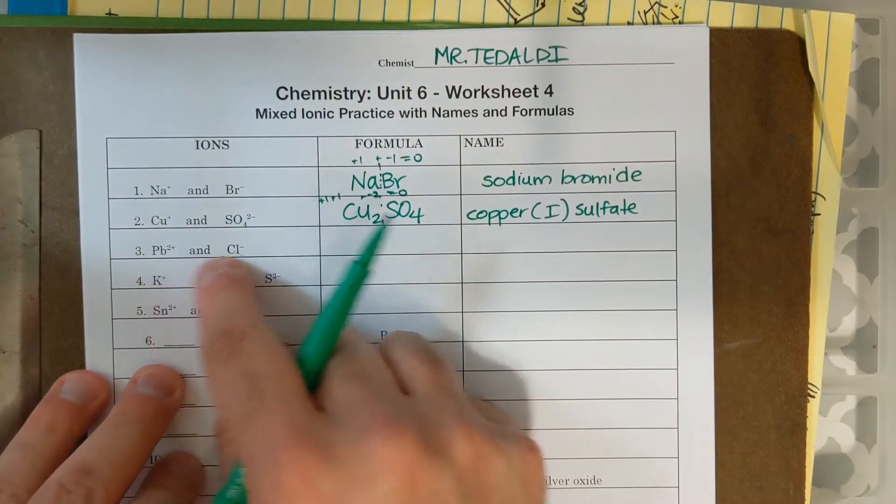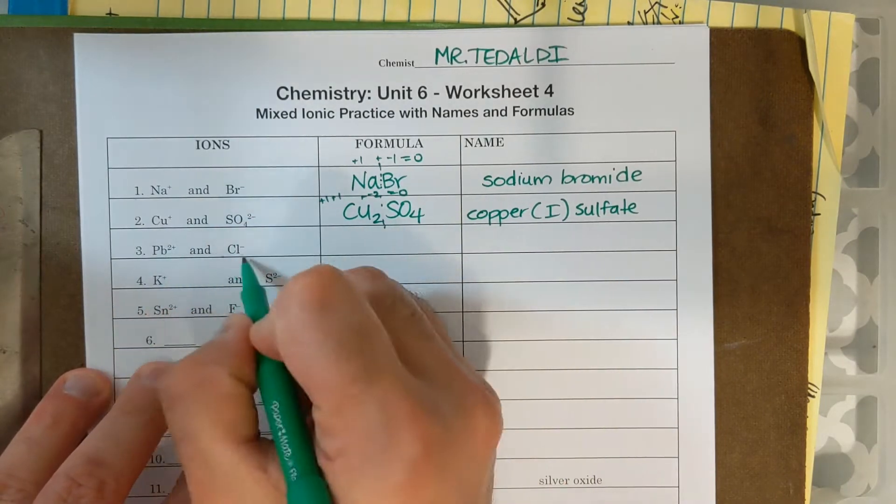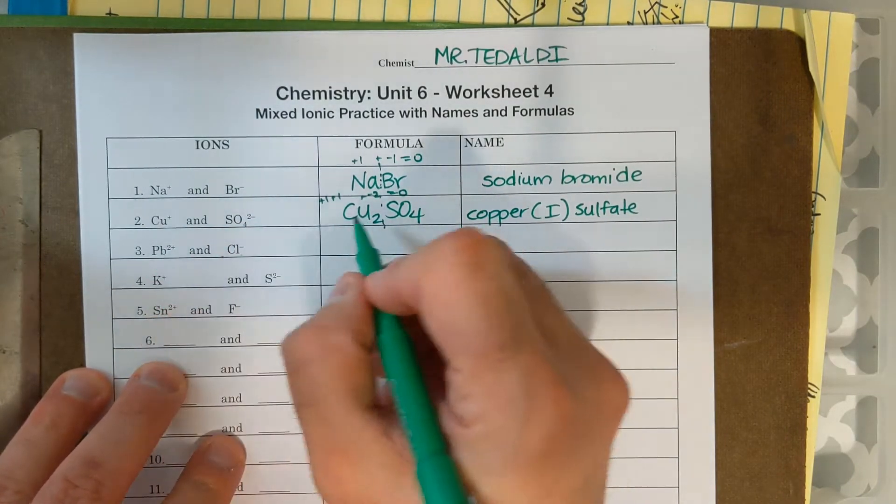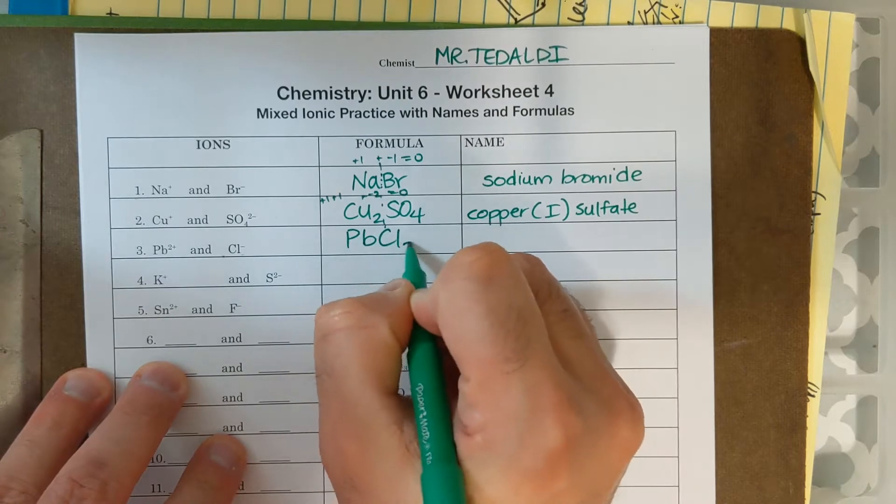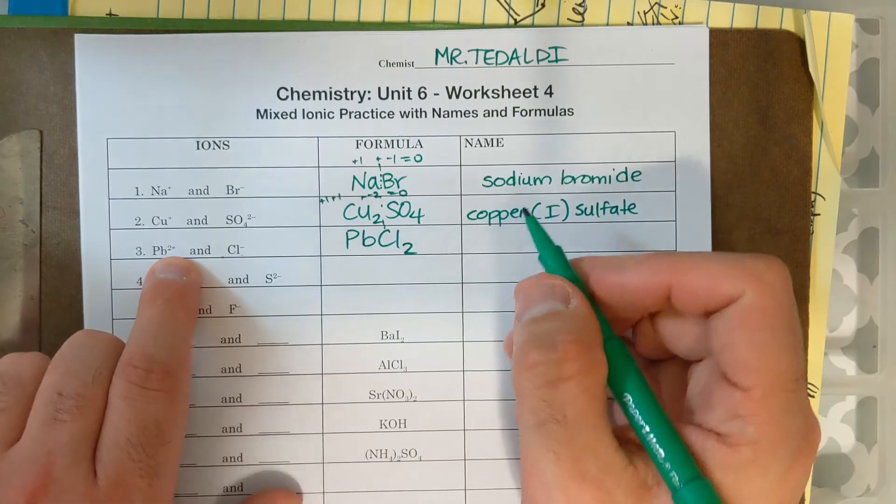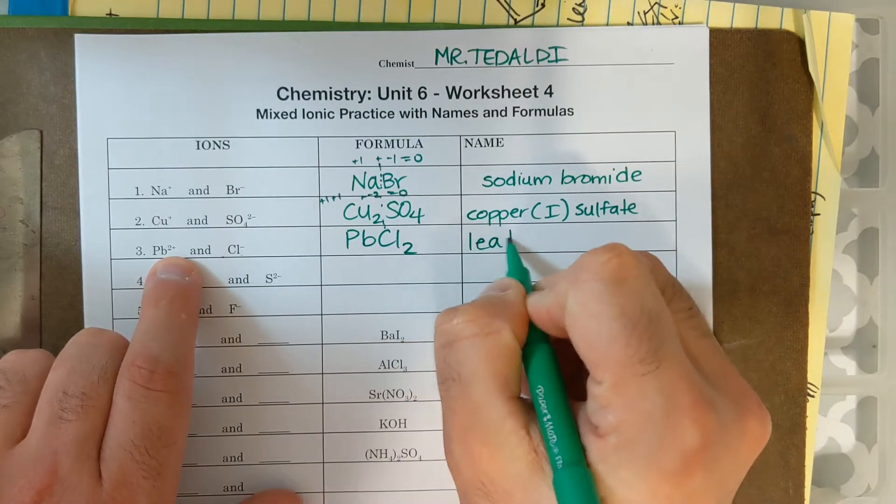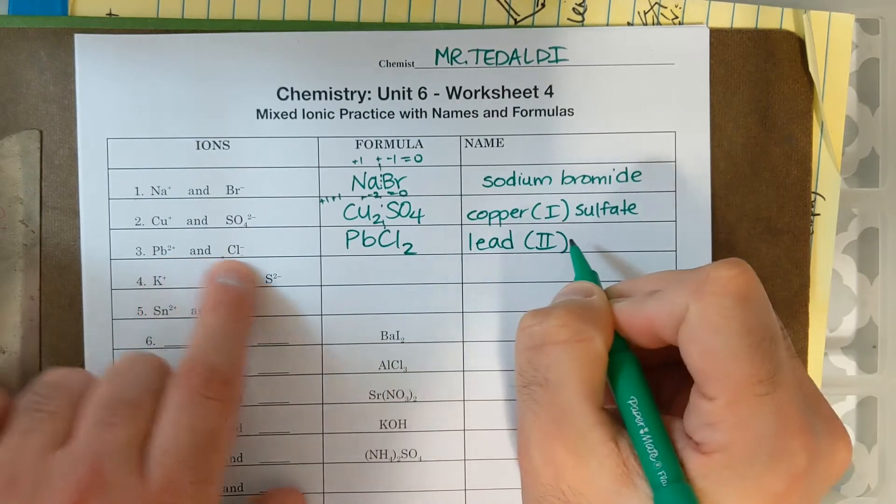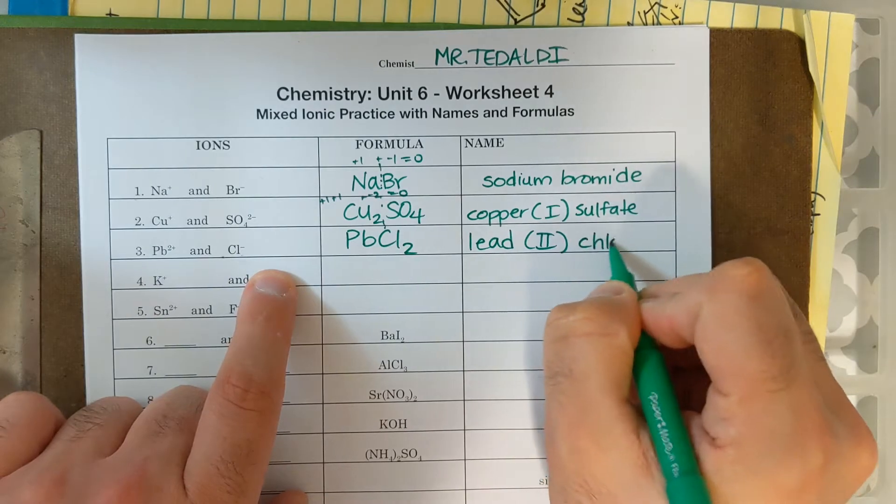Now I'm going to do the next one, PB two plus and CL minus. If I do the crisscross method, I'm going to need two CLs, one PB. PB is a transition metal that needs a Roman numeral. Its charge is plus two, so lead is PB, Roman numeral two, chlorine you name as chloride.